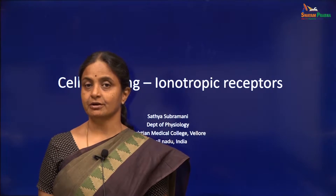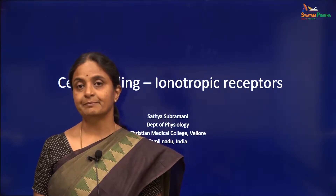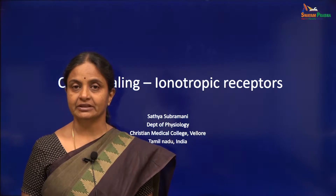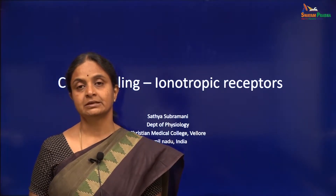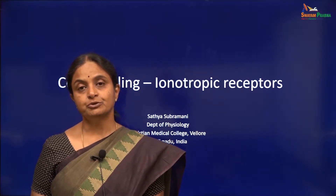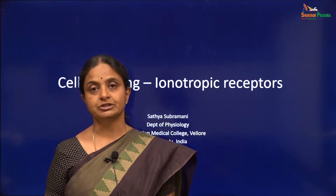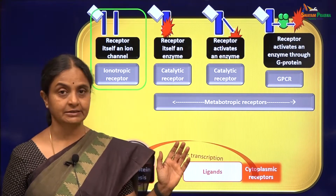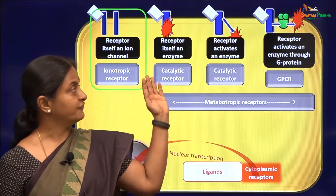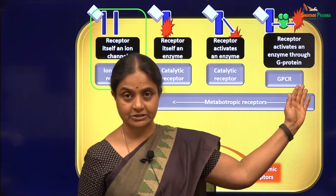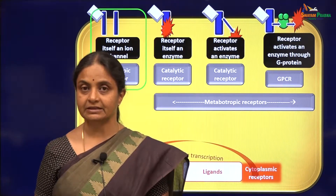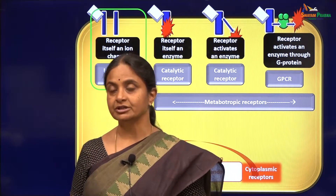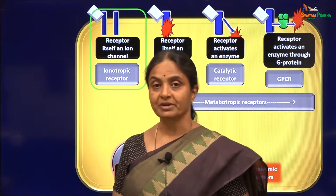This is the last lecture on cell signalling pathways and a very short one. In this session we will be dealing with ionotropic receptors. The approach to studying cell signalling was to classify membrane receptors in four ways. We have considered some details of the other three types of receptors in the earlier sessions, and in this session we are going to look at ionotropic receptors.